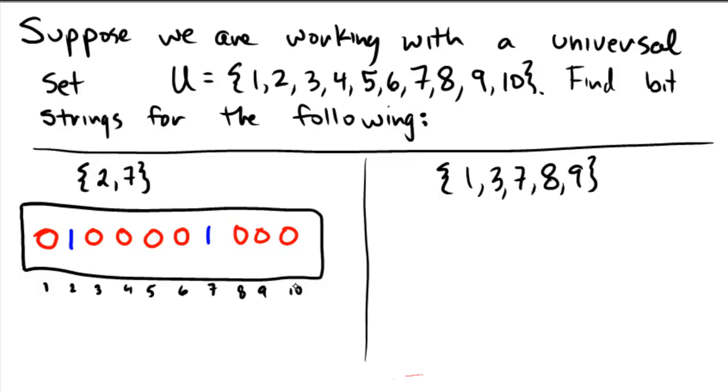On the right, we have a much larger set. This one has 5 elements. In this case, number 1 is on, number 2 is off, number 3 is on, numbers 4, 5, and 6 are off, but 7, 8, and 9 are on, and finally 10 is off.